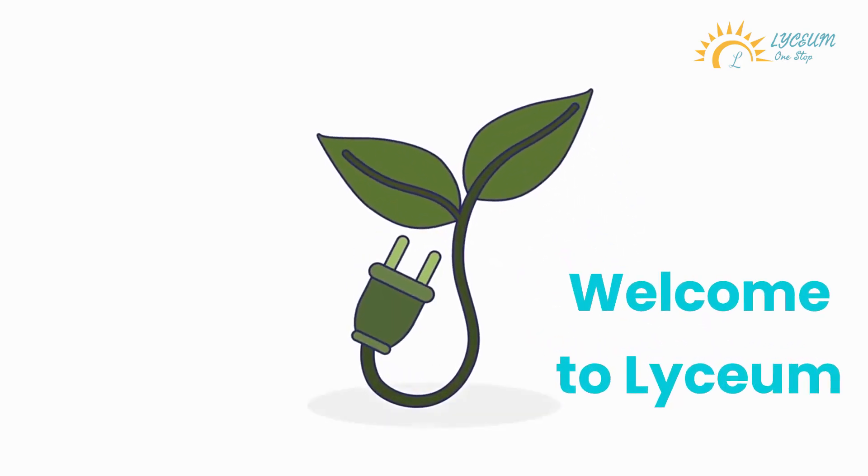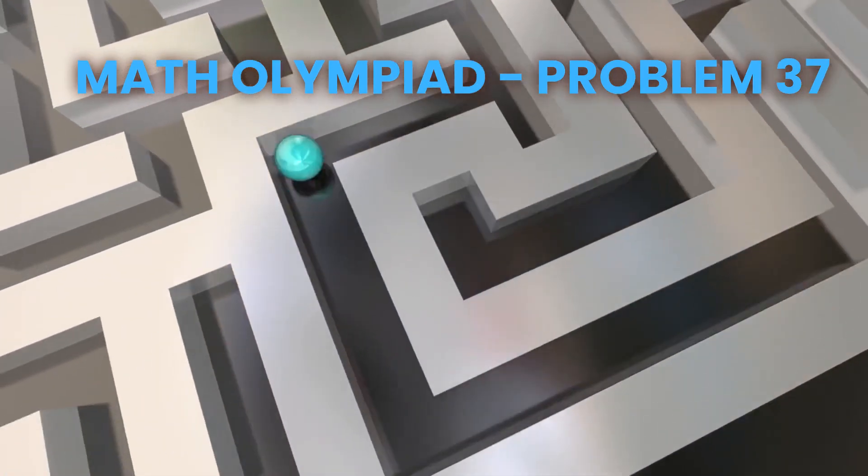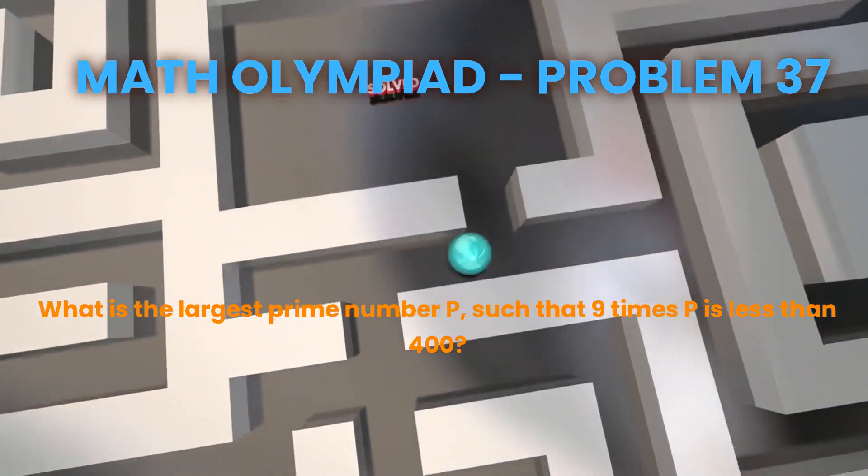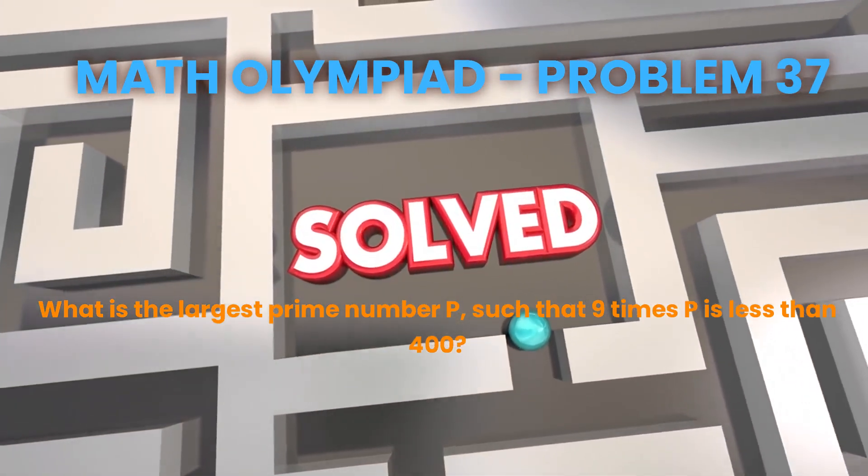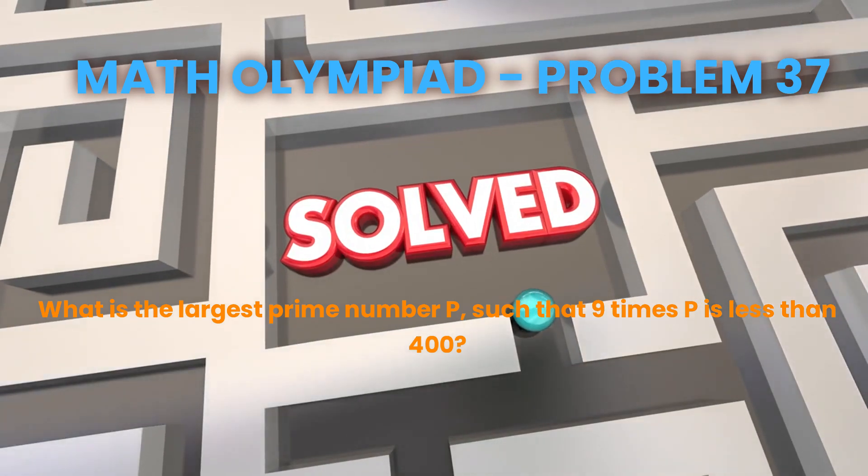Welcome to Lyceum. Math Olympiad Problem 37. What is the largest prime number P, such that 9 times P is less than 400?